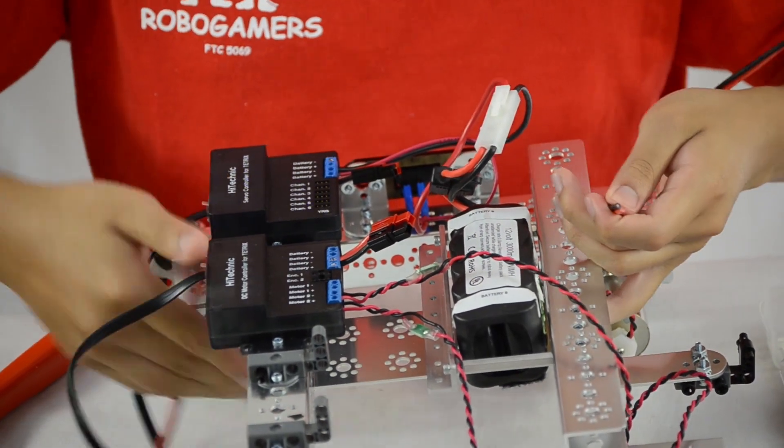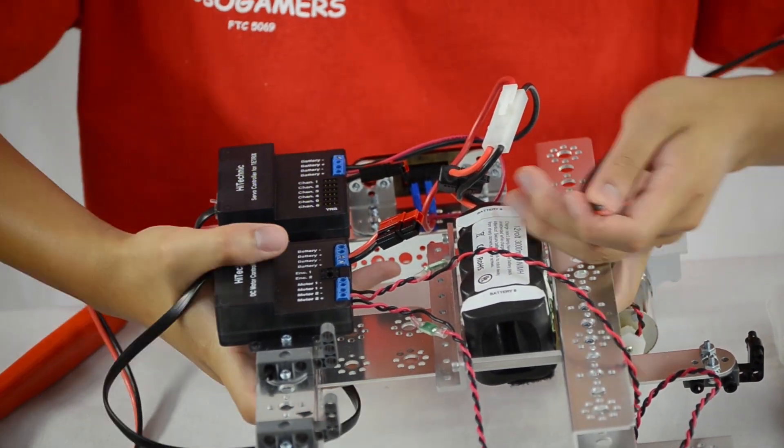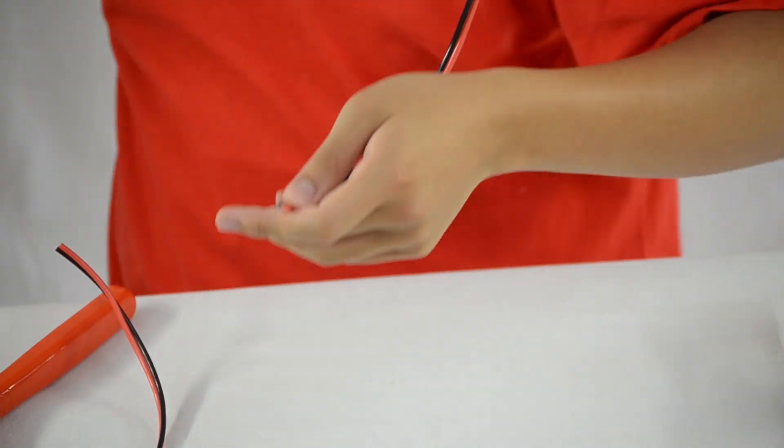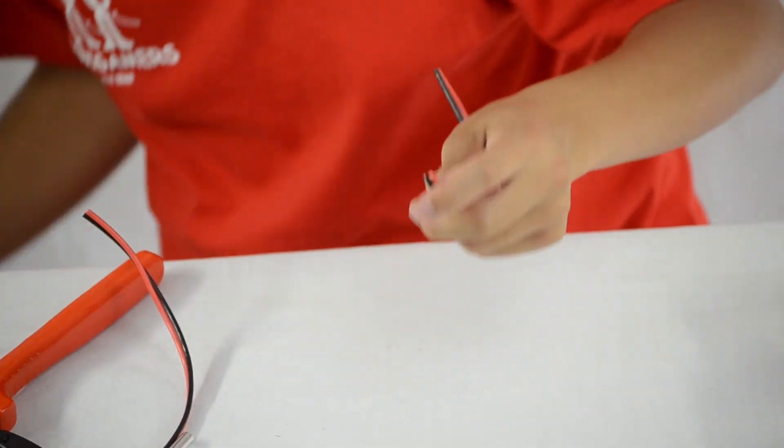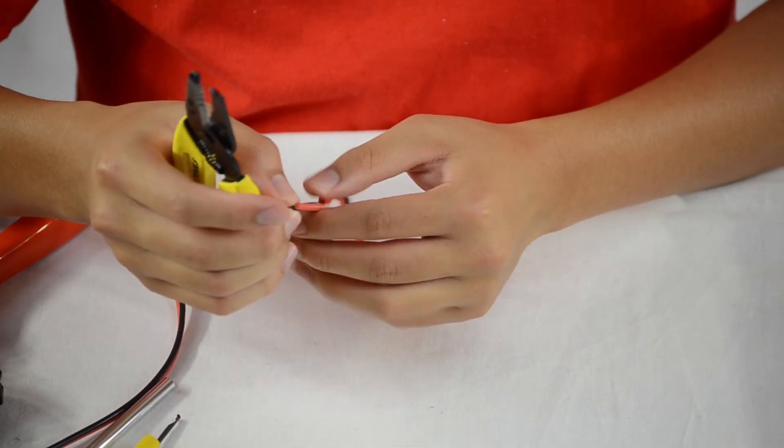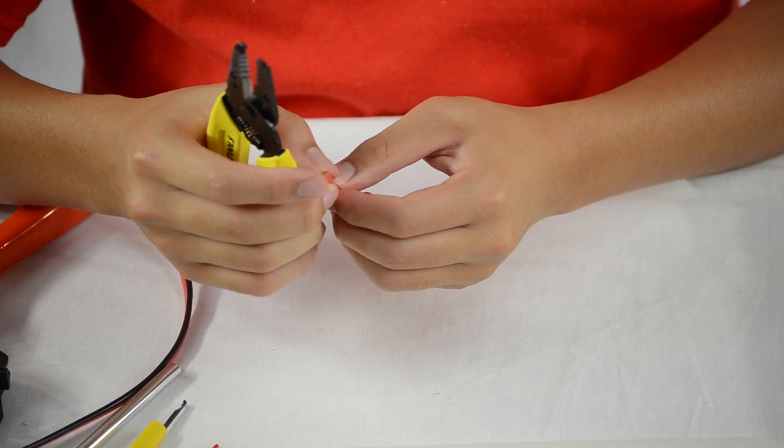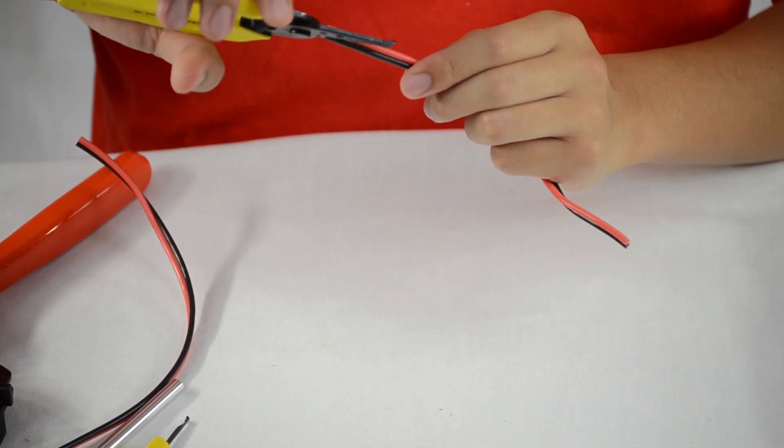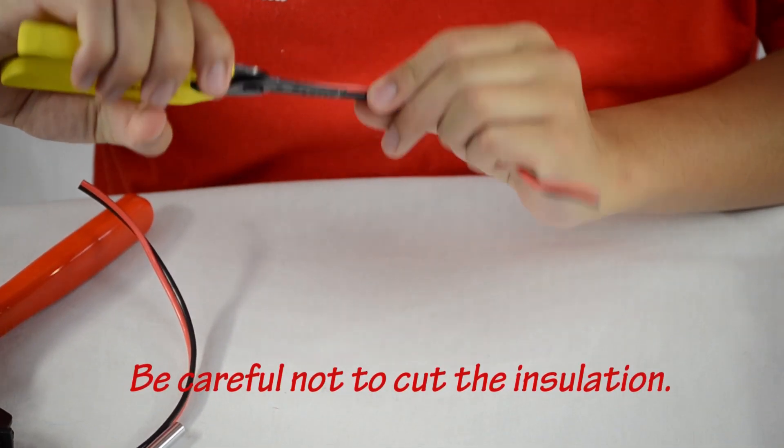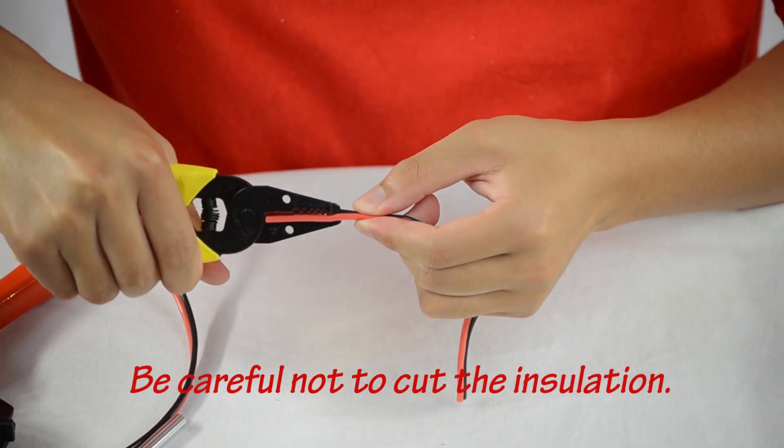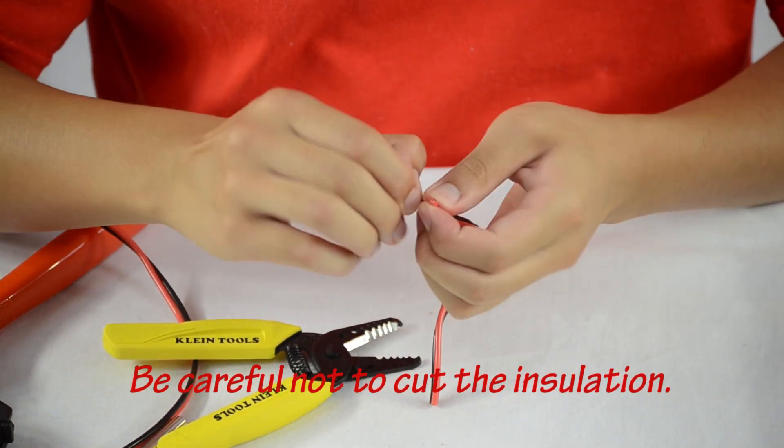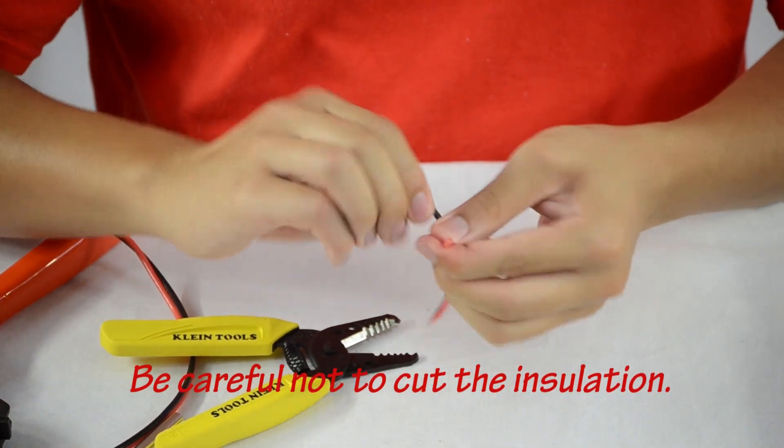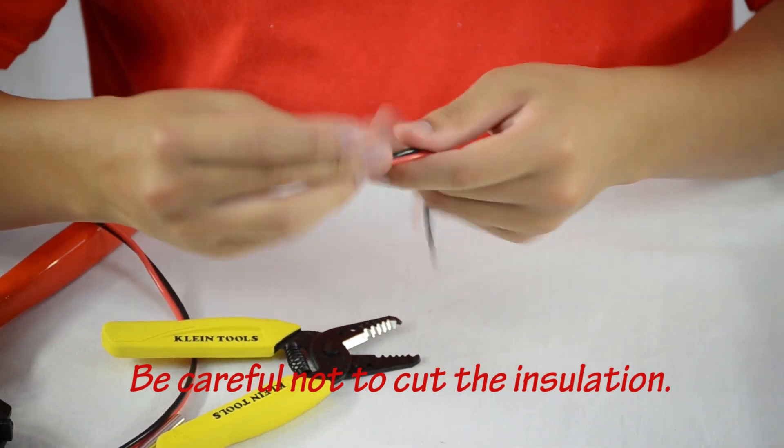And you can remove this. And now you're just going to want to separate the black end from the red end. Just the tips though, because you want the rest of the wire to stay intact. And just cut down the middle. And just separate it a little bit. And then you're just going to want to do this on both sides.